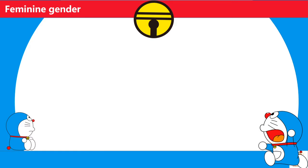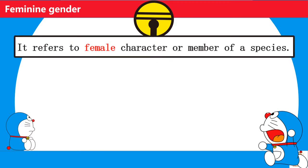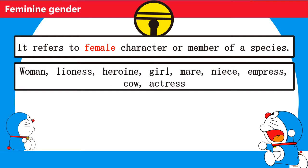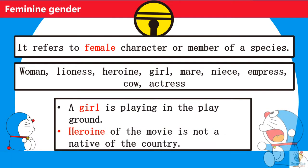Feminine Gender refers to female character or member of species. Woman, lioness, heroine, girl, mare, niece, empress, and cow are some examples of Feminine Gender.